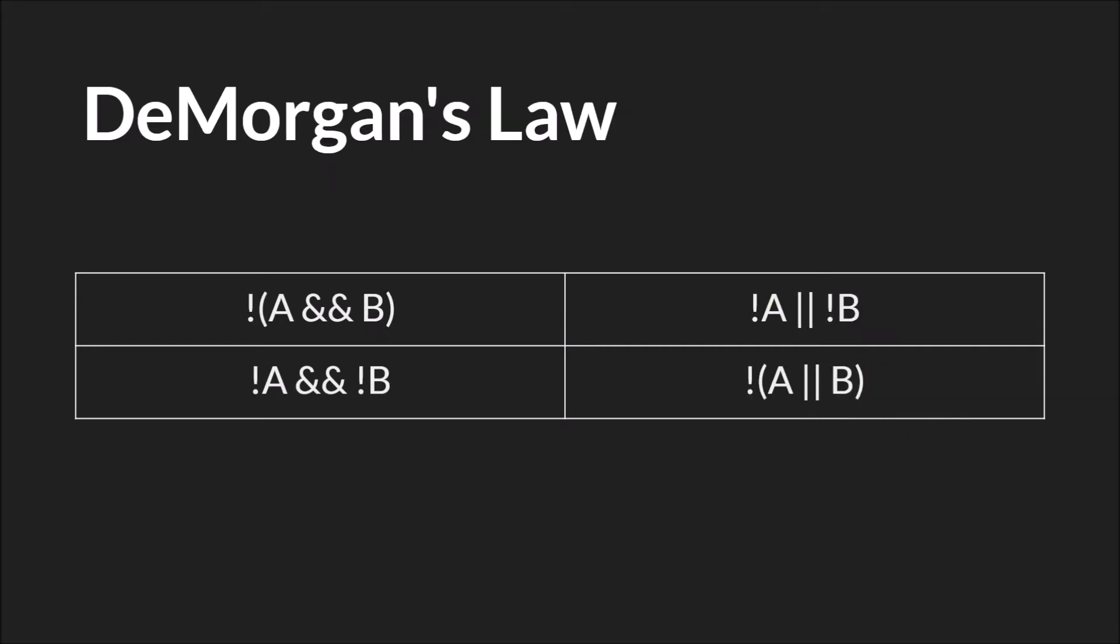Finally, we have DeMorgan's Law. DeMorgan's Law says that not A and B is the same as saying not A or not B. Or not A and not B is the same as saying not A or B.